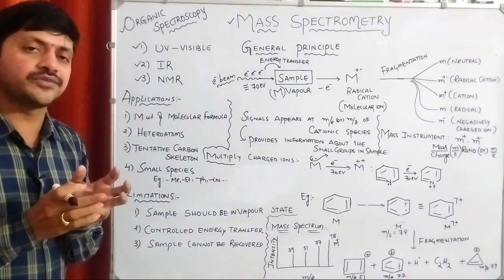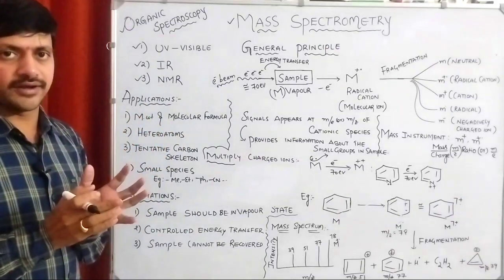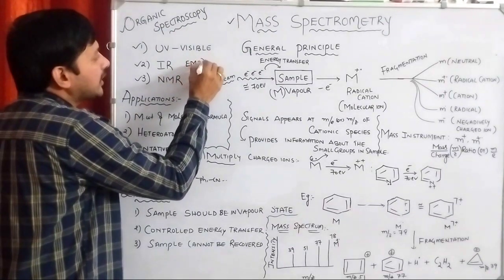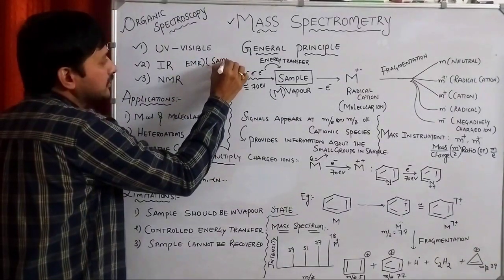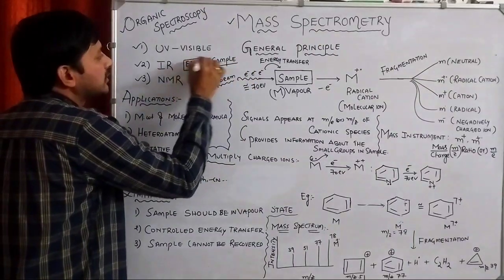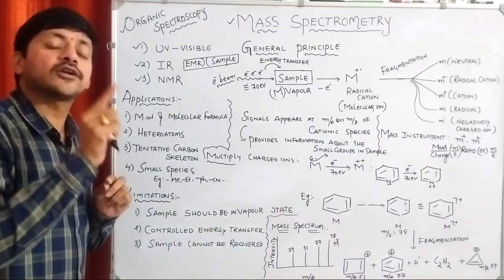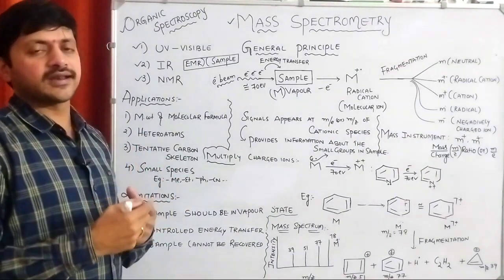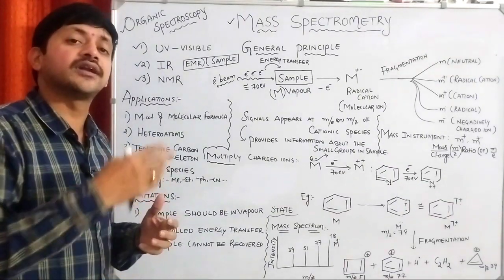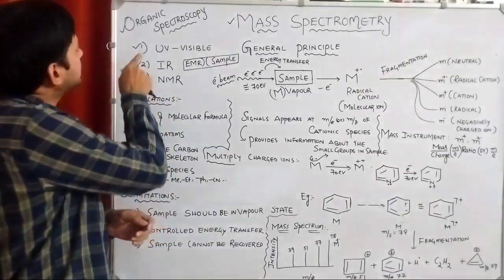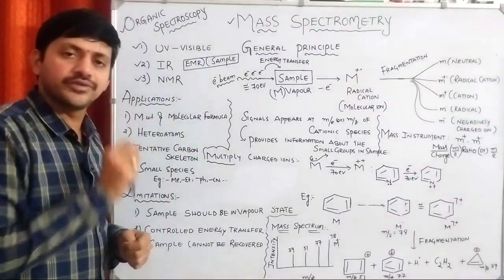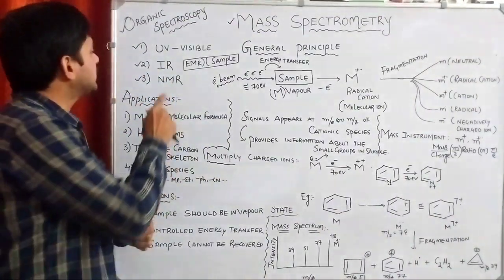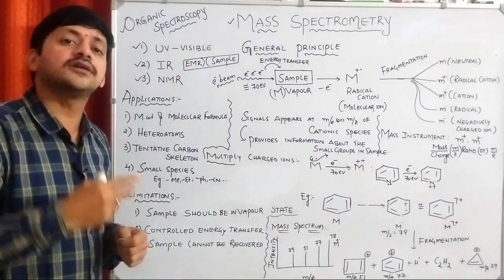What is the difference between spectroscopy and spectrometry? We know that if an unknown sample is interacted with electromagnetic radiation, that is commonly called spectroscopy. In spectroscopy we have different kinds of interactions: UV-visible spectroscopy interacts with UV-visible light, IR spectroscopy interacts with infrared light, and NMR spectroscopy interacts with radio waves.